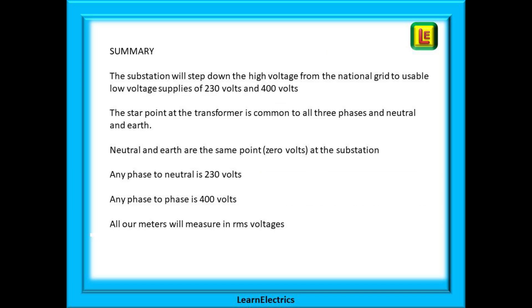In summary then, the substation will step down the high voltage from the national grid to usable low-voltage supplies of 230 volts and 400 volts. The star point at the transformer is common to all three phases and neutral and earth. Neutral and earth are the same physical and electrical point, zero volts at the substation. Measuring any phase to neutral is 230 volts and any phase to phase is 400 volts.